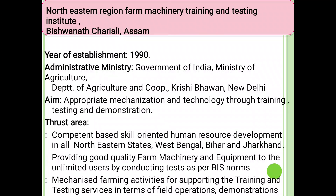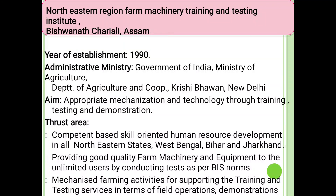Northeast Region Farm Machinery Training and Testing Institute, Hisar and Biswanath Chariali, Assam — details of when they will be developed and what type of machines are to be tested there. Year of establishment: 1990. Administrative Ministry: Government of India, Ministry of Agriculture, Department of Agriculture Cooperation and Farmers' Welfare, New Delhi. Mission: Appropriate Mechanization and Technology Through Training, Testing and Demonstration. Thrust area: compound-based, skill-oriented human resource development in all northeastern states, West Bengal, Bihar, and Jharkhand. Providing good quality farm machinery and equipment to the end users by conducting tests as per Bureau of Indian Standards norms.